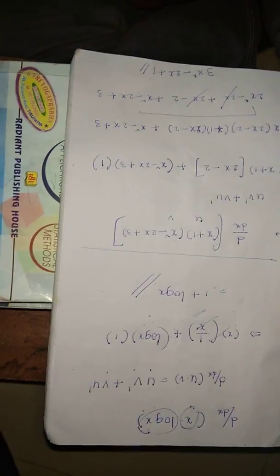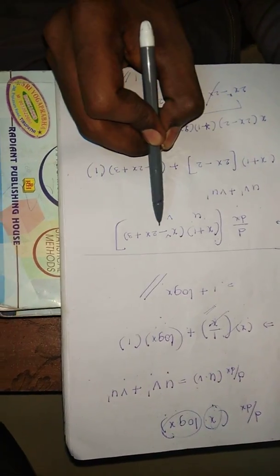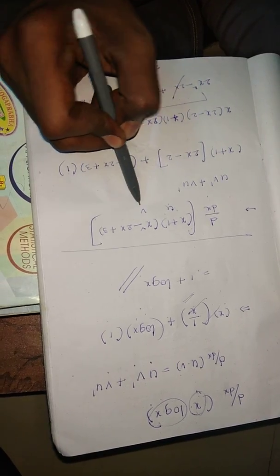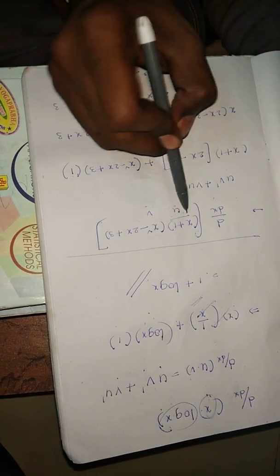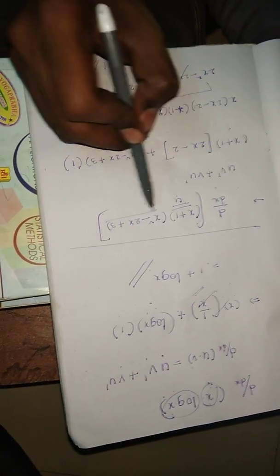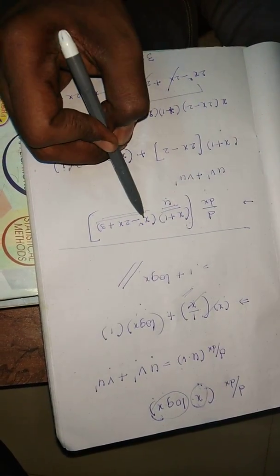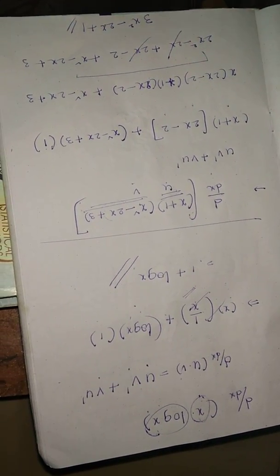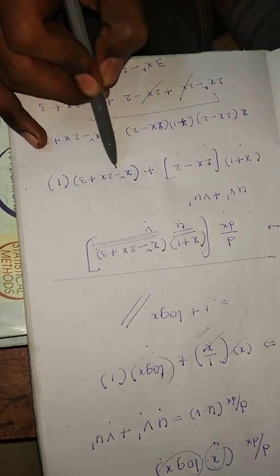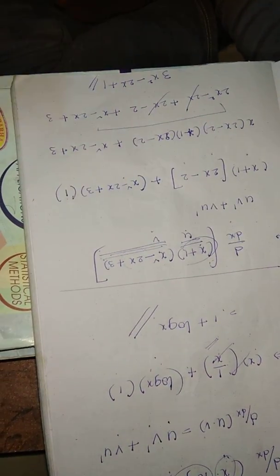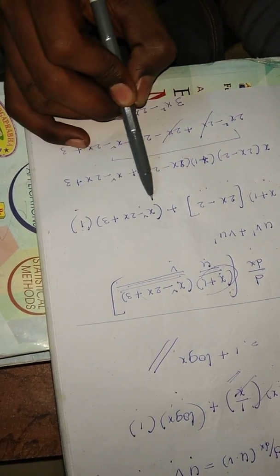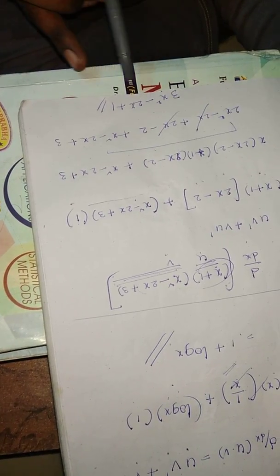Next, using the cancel method: d/dx of (x+1)(x²−2x+3). Let u = x+1 and v = x²−2x+3. Using u·v' + v·u': v' = 2x − 2 (since the constant 3 differentiates to 0), and u' = 1. So: (x+1)(2x−2) + (x²−2x+3)(1). Expanding and simplifying gives 3x² − 2x + 1.